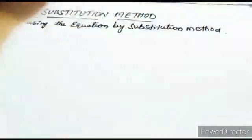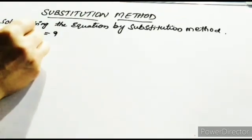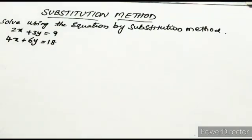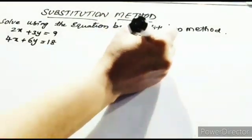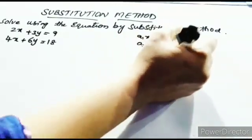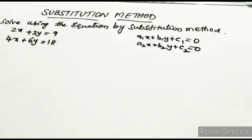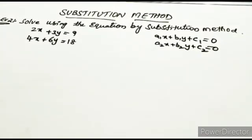The equations are: 2x plus 3y equal to 9, and 4x plus 6y equal to 18. The condition for a pair of linear equations in two variables is a1x plus b1y plus c1 equal to 0, and a2x plus b2y plus c2 equal to 0. These equations satisfy that condition.